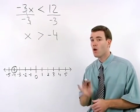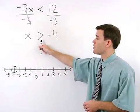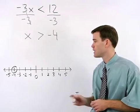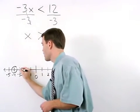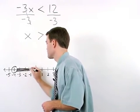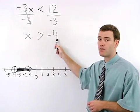The reason we use an open dot at negative 4 is that x is greater than negative 4, but it is not equal to negative 4. Next we draw an arrow going to the right on our number line to represent all numbers greater than negative 4.